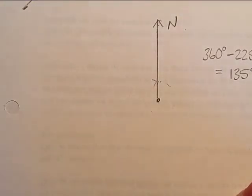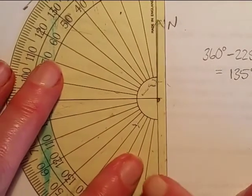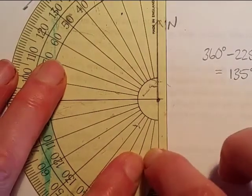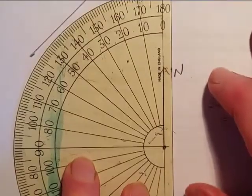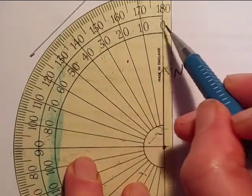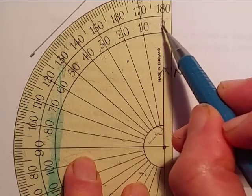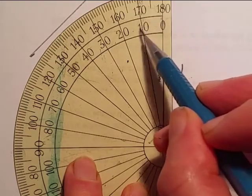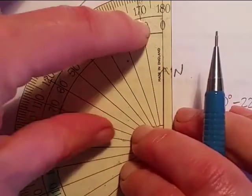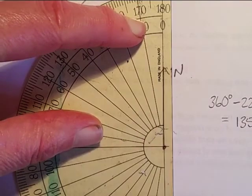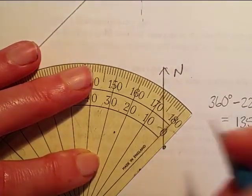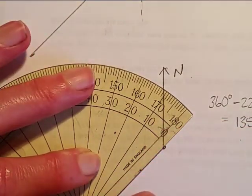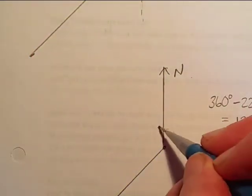So you could line yourself up here and measure 135 degrees around that way. Now make sure you're using the inside scale on the protractor because we want to make sure we go from 0, 10, 20, 30 all the way up to 135. That is the bearing that you're looking for.